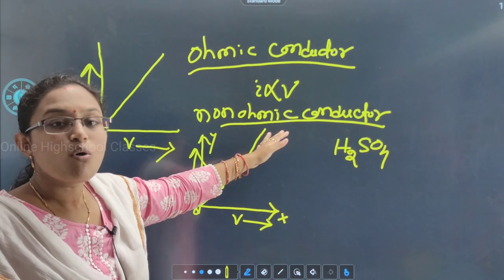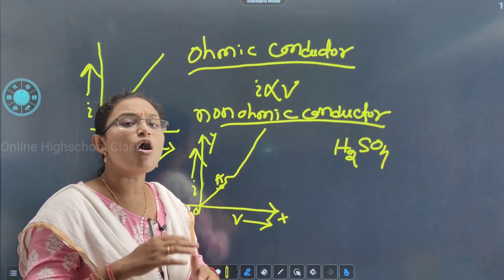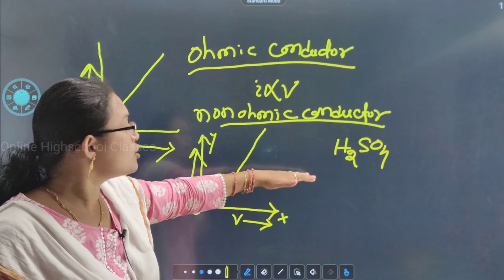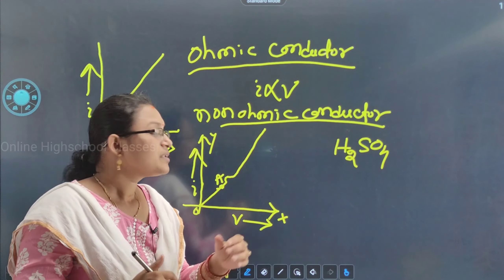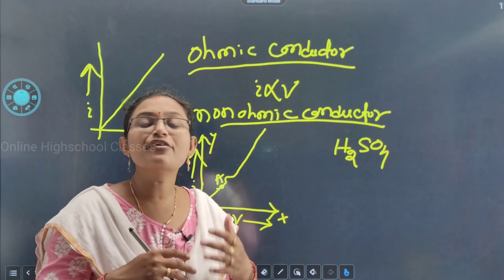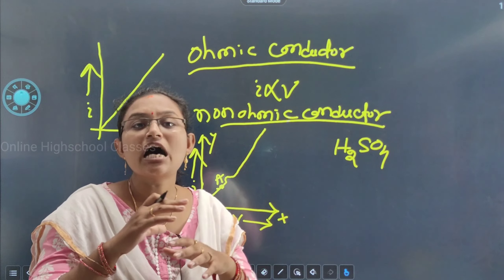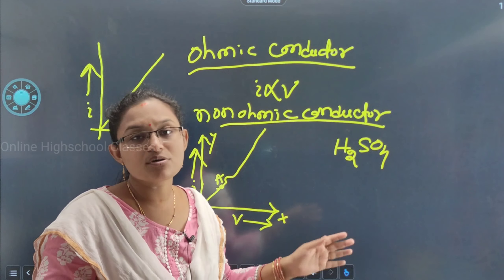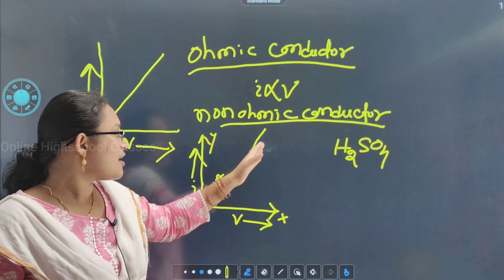Beyond A, it obeys Ohm's law because at low potential in H₂SO₄ solution diluted with water, there is some obstacle — the ions cannot move and cannot neutralize themselves. But after some time, that obstacle is overcome, so beyond A the graph becomes a straight line and Ohm's law is obeyed.